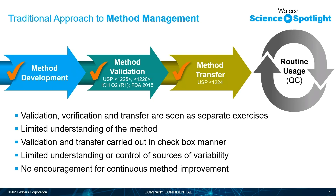Even though regulatory guidelines are considered during each step — especially during method validation and transfer — the procedures of moving methods to the next stage is a very checkbox-like approach. Once the method has passed the required written specifications, the method is considered suitable to move on. Limited understanding or control of sources of variability means there is no understanding of how changes in method performance can be compromised or improved, or how performance can be maintained consistently throughout the method lifecycle. Therefore, the world has concluded that the standard checkbox approach for method development is maybe not the most suitable approach anymore.